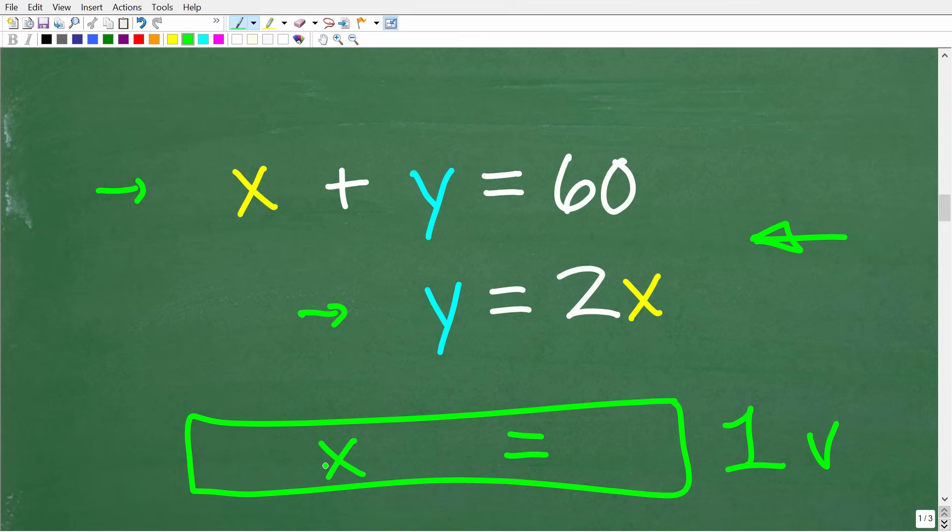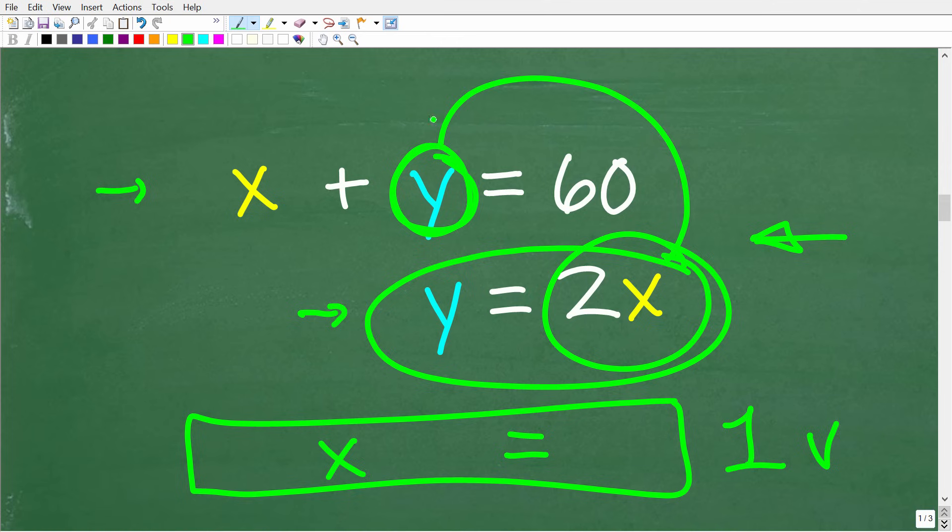There's different methods that you learn in algebra to do this, but in this case if we notice Y is equal to 2X, well we can actually substitute this Y right here for 2X, because Y and 2X are the same thing. So if we replace this Y or substitute it with 2X, we'll end up with one equation in all X. And then of course we can solve for X, and then once we have that answer we can easily figure out what Y is equal to. So let's do that now. This is actually called the substitution method.